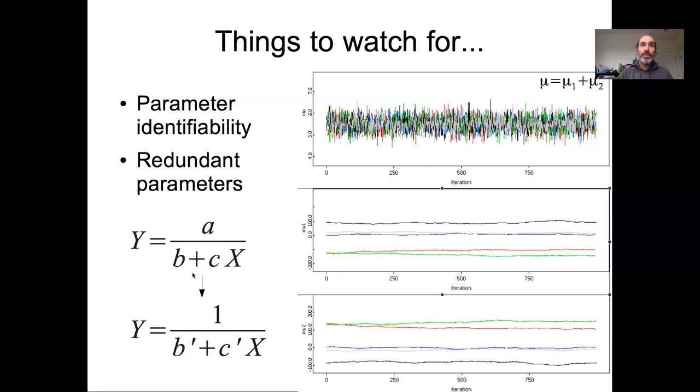And then you end up with a constant out in front of one and a constant out in front of the other. When you multiply them together, you have two constants that are multiplied by each other and you get an unidentifiable situation. And it's not obvious when you're looking at individual equations where individual equations may look identifiable, but the overall process model that involves multiple processes might generate redundancies.